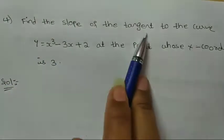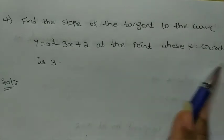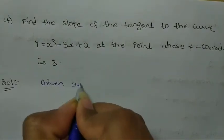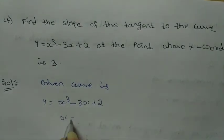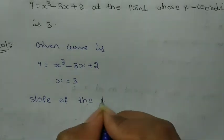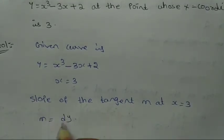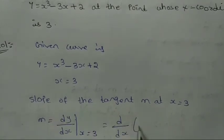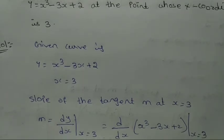Fourth question: Find the slope of the tangent to the curve y = x³ − 3x + 2 at the point whose x-coordinate is 3, so x = 3. Solution: given curve is y = x³ − 3x + 2 at x = 3. Slope of tangent m = dy/dx at x = 3 = d/dx of x³ − 3x + 2 at x = 3.